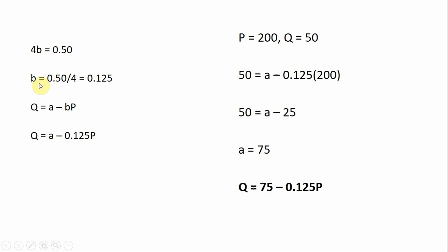Dividing both sides through by 4, we get B equals 0.125. So that's what B is going to take on in this linear demand curve.